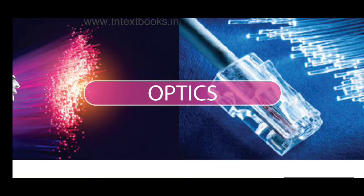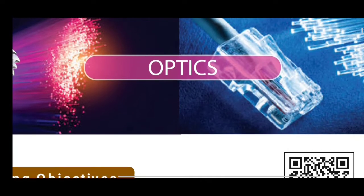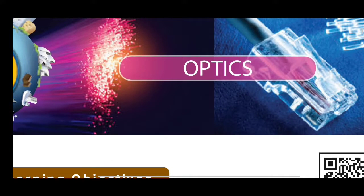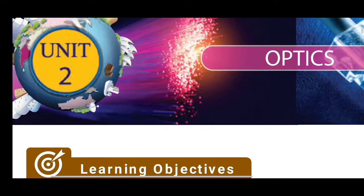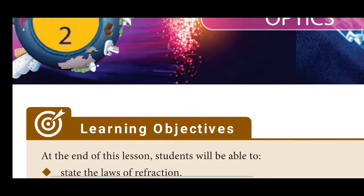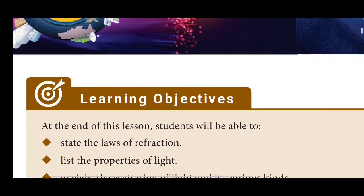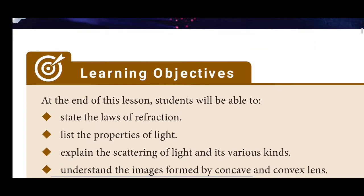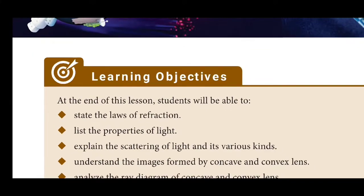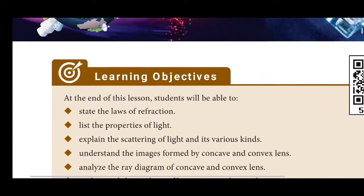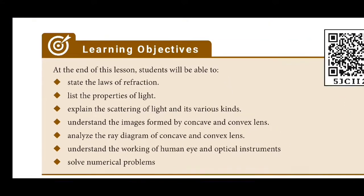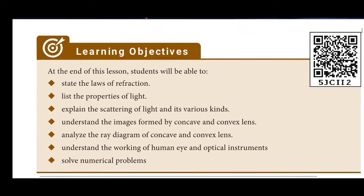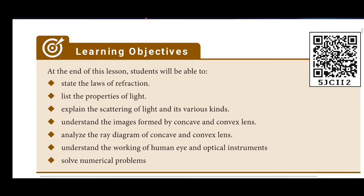Light is a form of energy. In the lesson, we are going to talk about the topic of Light. First, we will state the law of Refraction. Then we can see the properties of Light. We will explain the scattering and various kinds. Light is scattered — that is the kind of scatter.